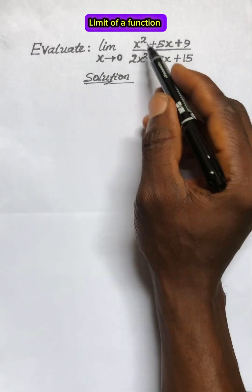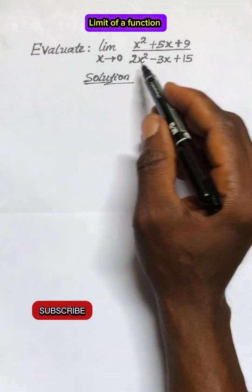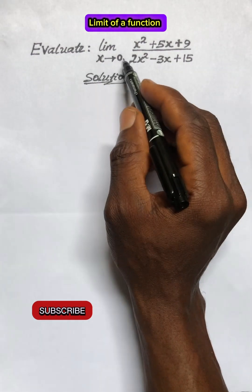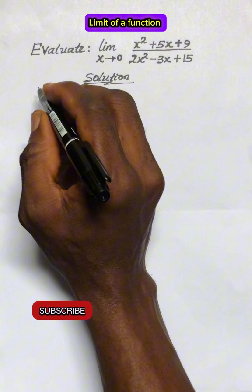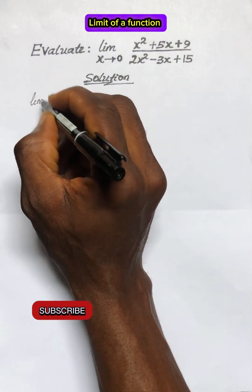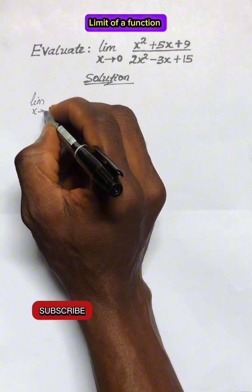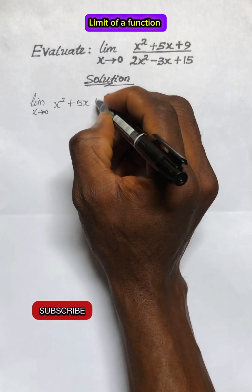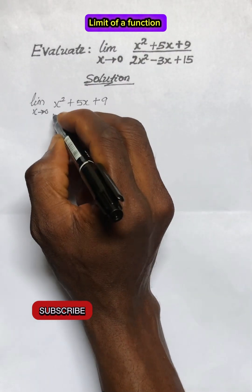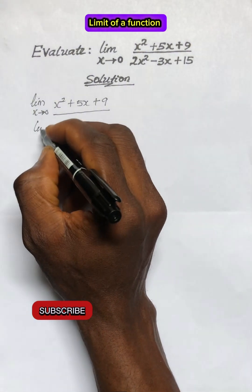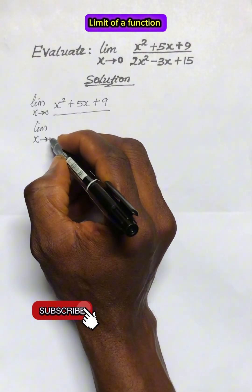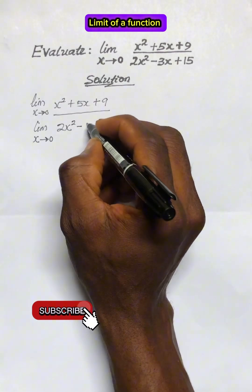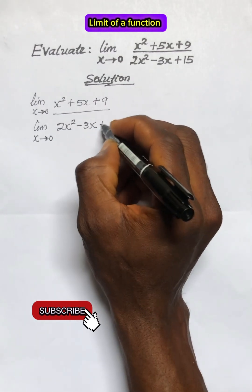Evaluate the limit of (x² + 5x + 9) all over (2x² - 3x + 15) as x tends to 0. Solution: Now we have the limit as x approaches 0 of (x² + 5x + 9) all over the limit as x approaches 0 of (2x² - 3x + 15).